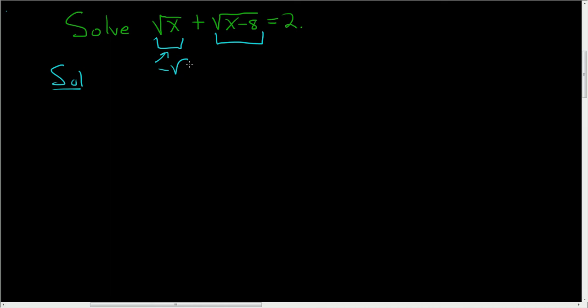So if we subtract the square root of x from both sides, we cancel here and we end up with the square root of x minus 8 equals 2 minus the square root of x.